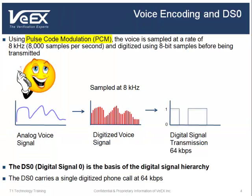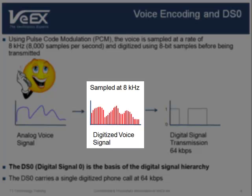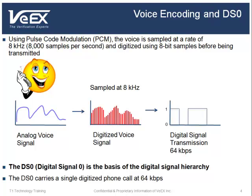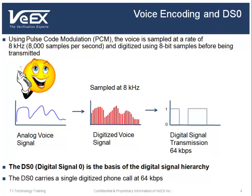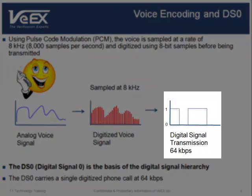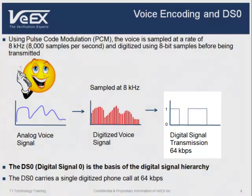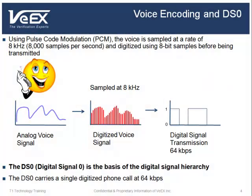Pulse-code modulation, or PCM, is used to digitize a voice conversation and to insert it on a T1 line. From the analog voice signal, 8,000 samples per second are taken, equivalent to a rate of 8 kHz. A sample is a measurement of the level of the analog signal. This sample is then converted into an 8-bit value. These 8-bit values provide 256 different levels of the analog signal. The G.711 Mu-Law algorithm is used in North America to map the voice spectrum into these 256 different levels.